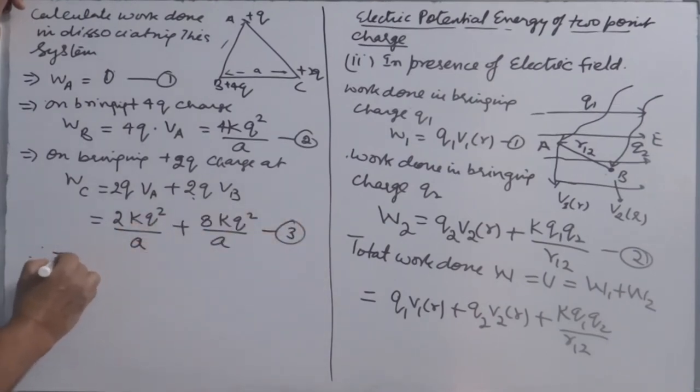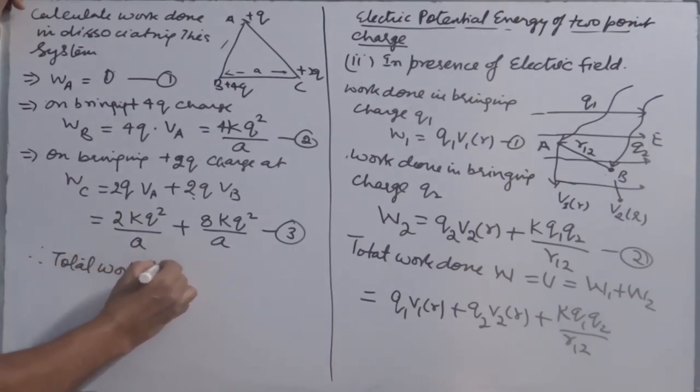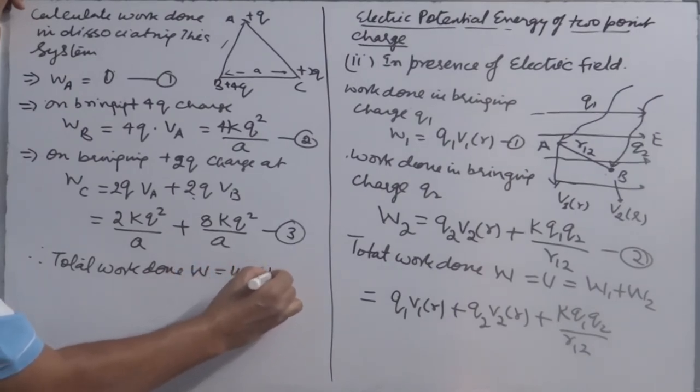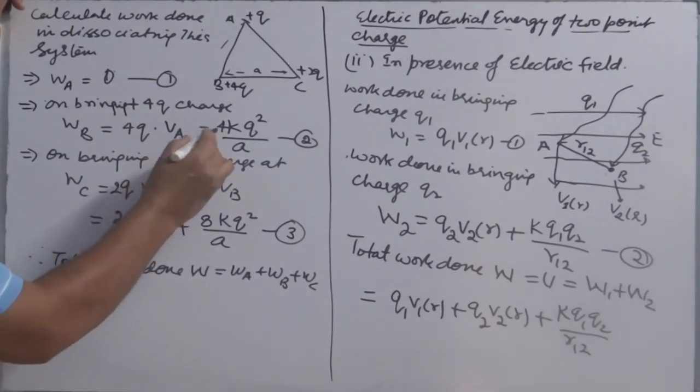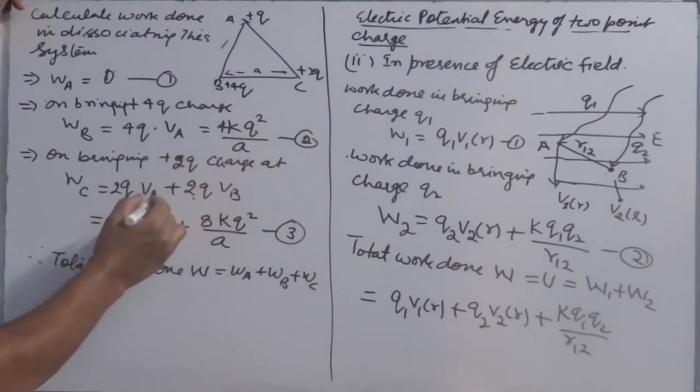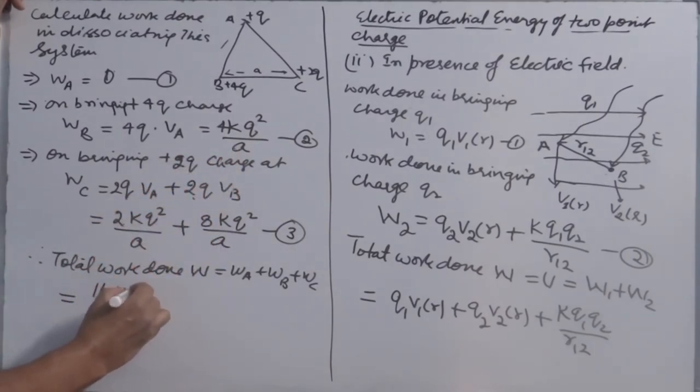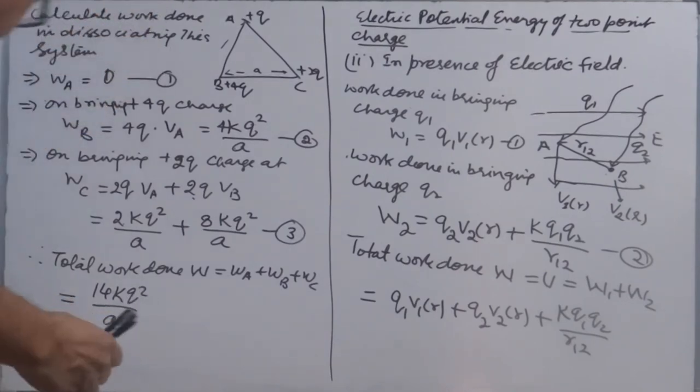Therefore total work done, W is equal to WA, WB, WC. So how much work done? 4KQ square over A and 10KQ square over A, 14KQ square over A. That will be the amount of energy required to dissociate this.